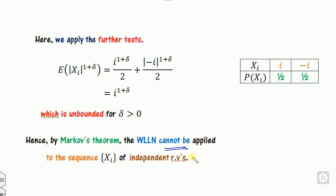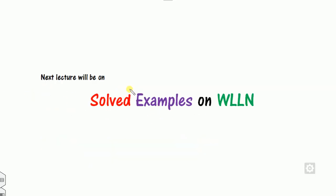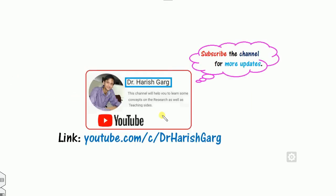This is the way you can check whether the weak law of large numbers holds or not across three different examples. In the next class we will see more examples on the weak law of large numbers for further clarity. Till then, follow this link and share the videos with others if you find them useful. Best of luck students, happy learning — see you in the next class.